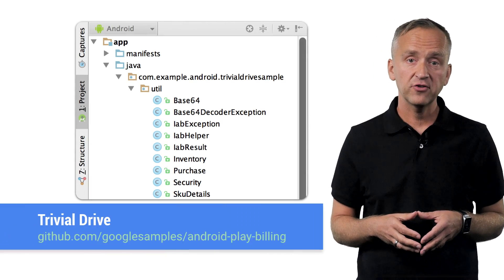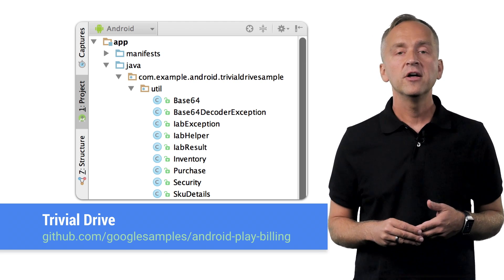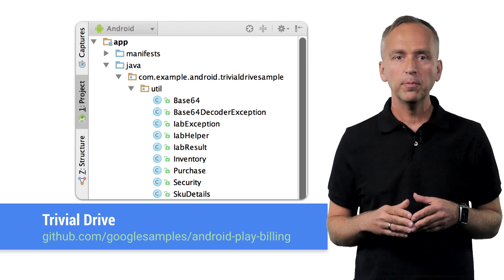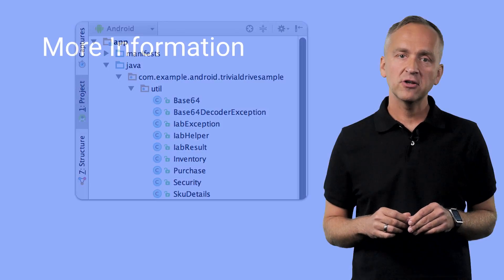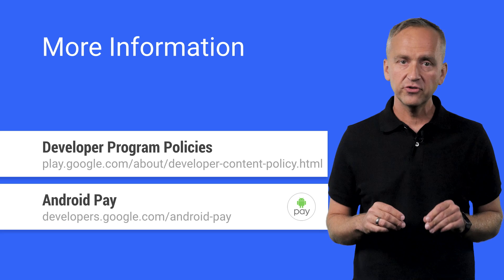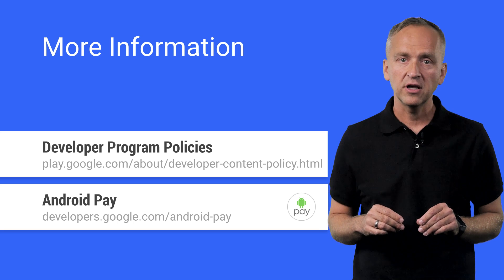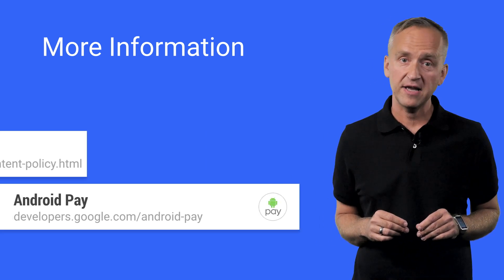Or better yet, run the sample Trivial Drive application, which comes with several convenience classes you can reuse in your own app. Note that you need to publish the app to the alpha channel before you can try it out. Remember that the Google Play in-app billing API is designed for digital products only. If you would like to sell physical products in your app, check out our Android Pay API. On behalf of your boss and the in-app billing API, I would like to say thank you for watching.